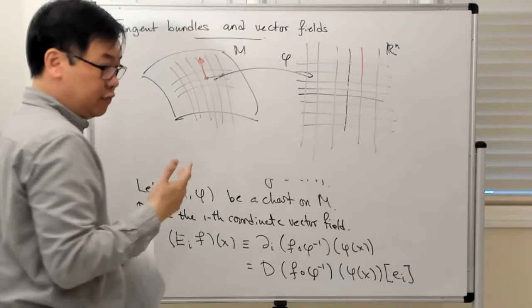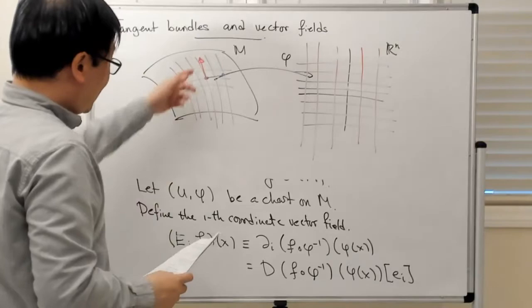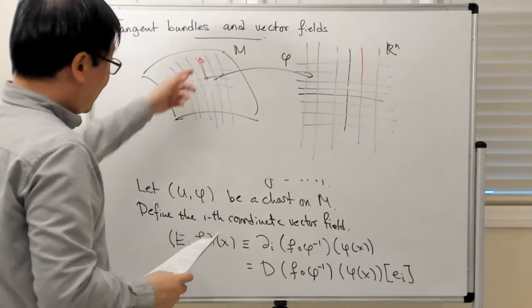So these tangent vectors, which are associated with these constant coordinate lines, form a basis for the tangent space at every point, and in particular for the tangent bundle.